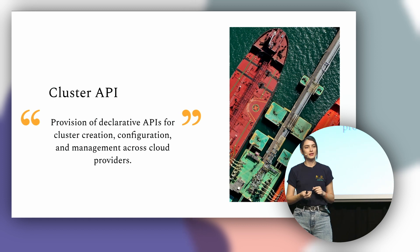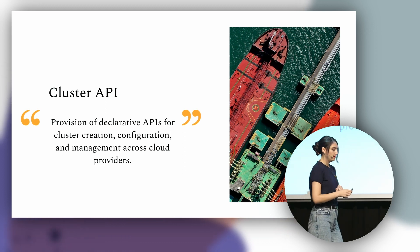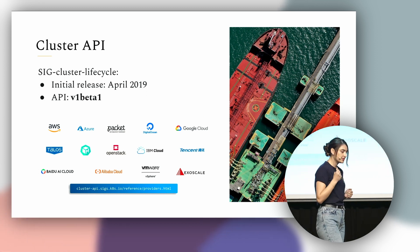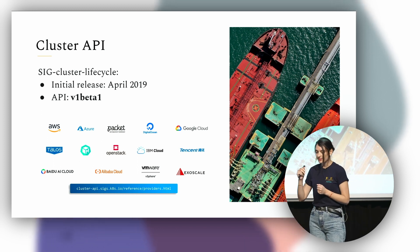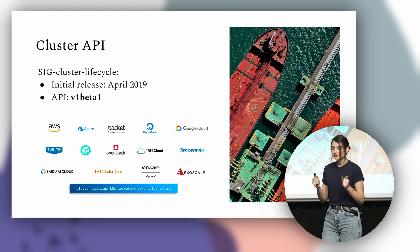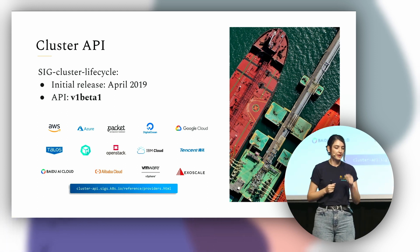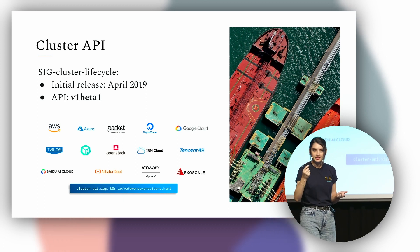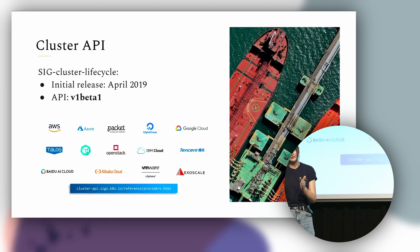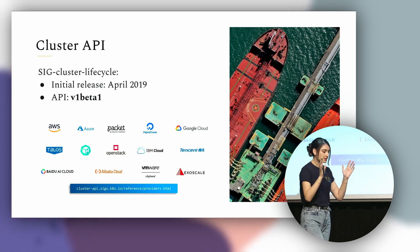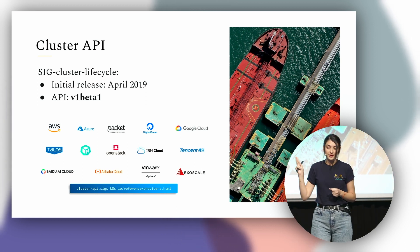That's how Cluster API came to be. Cluster API provides a set of declarative APIs for cluster creation, management, and deletion across multiple cloud providers. Cluster API — referring to the Cluster Lifecycle project — had its first release in April 2019. Since then, they've had multiple releases, currently supporting a v1beta1 endpoint, and they collaborate with more than 16 providers. Of course, we have the big providers such as GCP, AWS, and Azure. We also have support for Chinese providers — Baidu Cloud, Alibaba Cloud, and Tencent — which means you'll be able to deploy infrastructure to China with the same ease as anywhere else on the globe. And recently, there are new initiatives to provision bare metal using Cluster API, pushed by Packet, Metal3, and Tinkerbell.